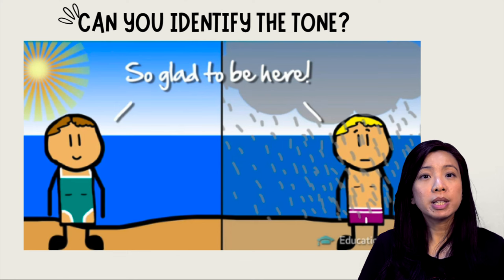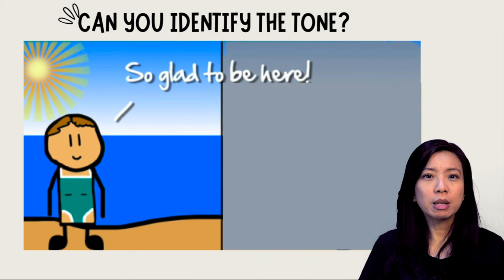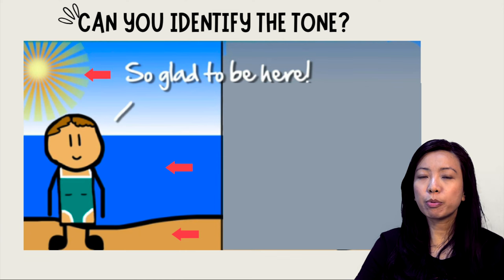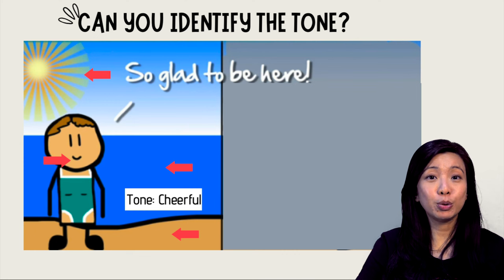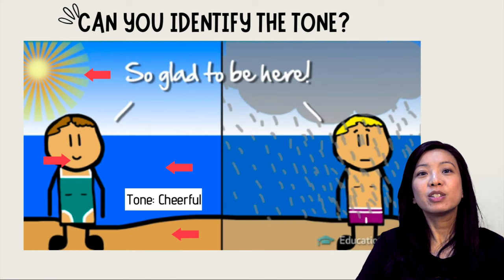Take a look at this picture. The two boys in the picture are saying the same thing — they're both saying 'so glad to be here' — but they're probably using different tones. Let's look at the picture on the left first. Notice the bright blue water and the bright yellow sand. The sun is also shining very brightly, so it looks like a very nice day to be at the beach. And you can see that the boy is smiling, so I would think that a cheerful tone is used for this picture.